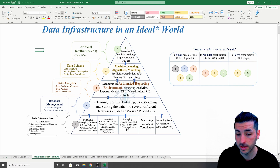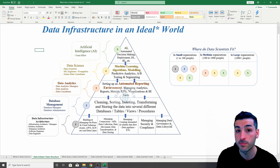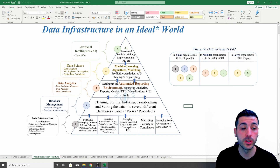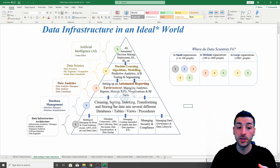Moving on to the next layer of the pyramid, we have the database management team, which consists of database managers and database administrators. What these people do is take the clean, reliable data provided by the data infrastructure architecture team, and they clean it, sort it, index it, transform it, and store it into several different databases, tables, and views so that the next team — the data analytics team — is able to start using it straight away.